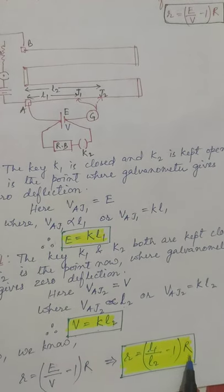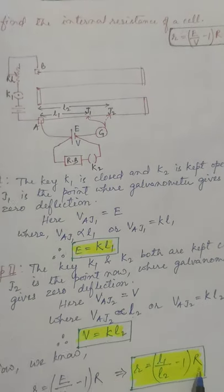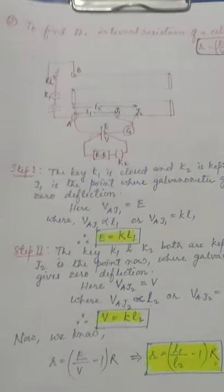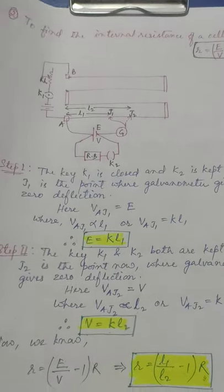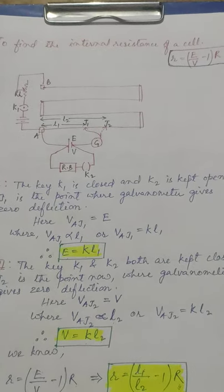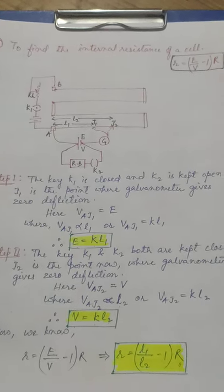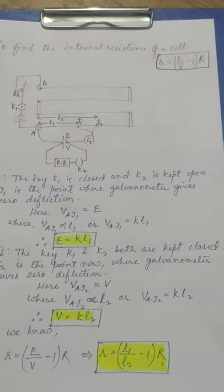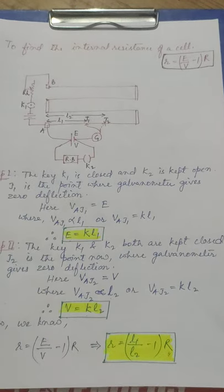So this is how the internal resistance of a cell is measured using a potentiometer. I hope this is clear. You can post your doubts and also give feedback on whether everything is understood.